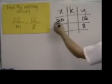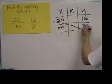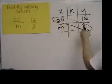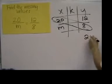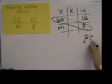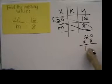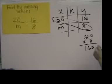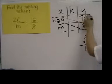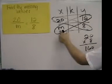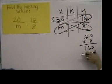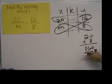Now what we can do is we can multiply 20 times 8, and that's pretty easy. 20 times 8 is equal to 160. So 12 times this missing value has to also equal 160.